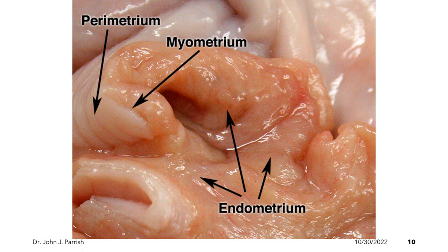The uterus is composed of three layers. The outer layer, or the serosa, is called the perimetrium. The muscle or muscular layer is called the myometrium. And the inner mucosa plus the submucosa comprise the endometrium.